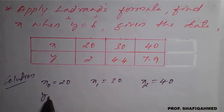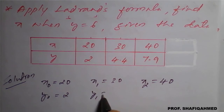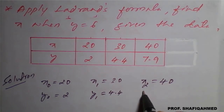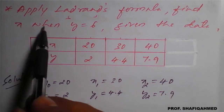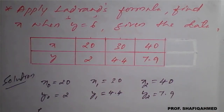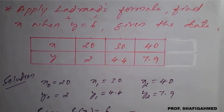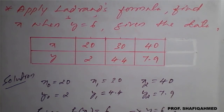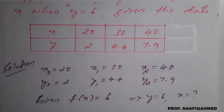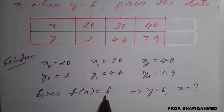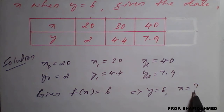Similarly, y naught will be considered as 2, y1 will be 4.4, and y2 will be 7.9. According to this, we need to find — they have given f of x equal to 6. I have taken f of x equal to 6, which implies y value is 6 and x value is the question mark — we need to find this.